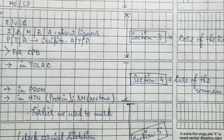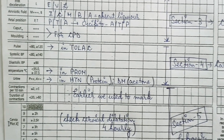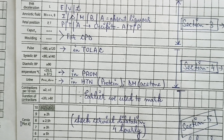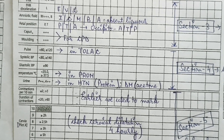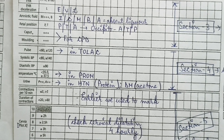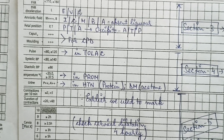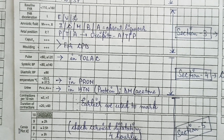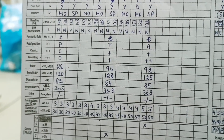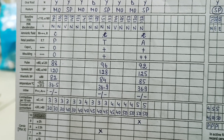Section 4 is care of the woman. All maternal parameters are recorded here: pulse, systolic blood pressure, diastolic blood pressure, temperature, and urine — protein and acetone. Protein is important in hypertensive patients, and ketone or acetone will be present in diabetic patients. These are all plotted at 4-hourly intervals.